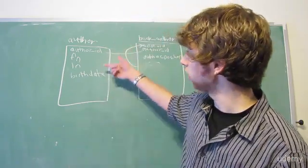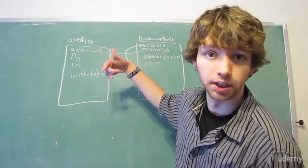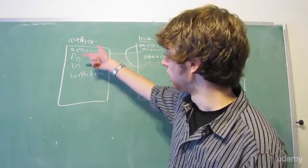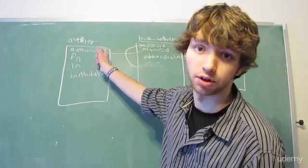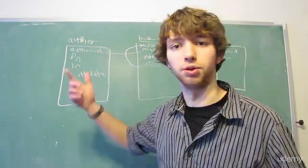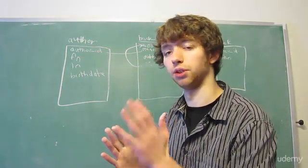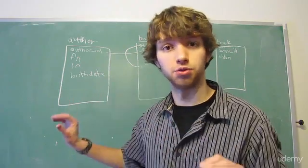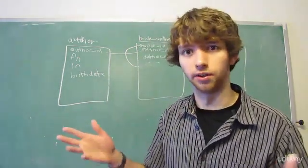Like, imagine for this. How can birthdate be dependent on only part of the primary key, which is author ID? Because there's only one. You can't depend on only part of an individual column. Does that make sense? Hopefully it does.